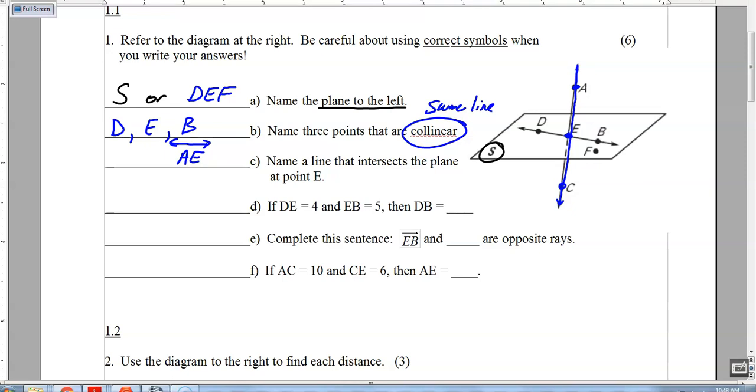Part D, now we're talking about the actual distance, because if you notice, there are no symbols above these things. So when there's no symbol above, that's talking about a distance. So the distance from D to E is four, and the distance from E to B is five. So D to B, I can add those up, use segment addition, would come out to be nine.